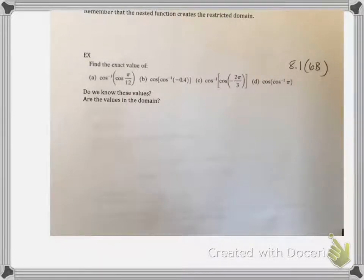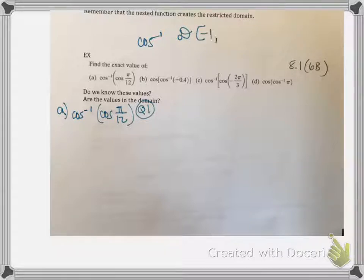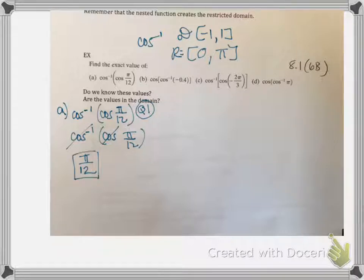Let's look at A through D. A: cosine inverse — the inside function is regular cosine, and we have pi over twelve. Pi over twelve is in quadrant number one. If you don't know that, change it to degrees and you'll see it's in quadrant one. Remember inverse cosine's range is zero to pi, so as long as the initial value is in quadrant one or two, we're okay. The inverse function cancels out cosine, and we're left with pi over twelve.